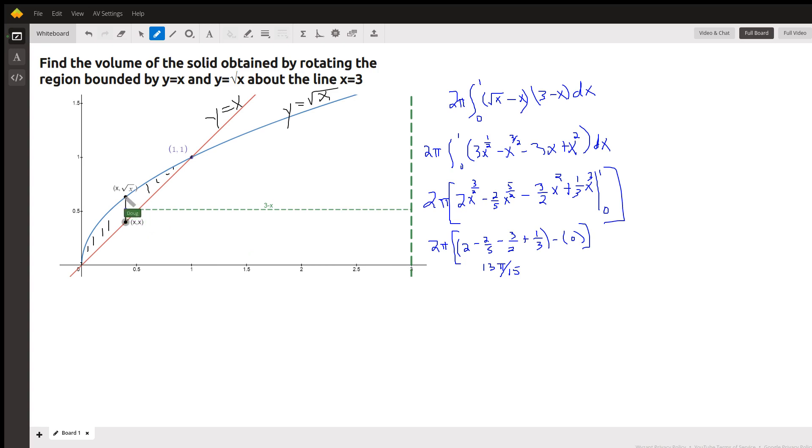So we need an algebraic expression for the height of a typical shell, which is the y coordinate at the top, the square root of x, minus the y coordinate at the bottom, which is just x, because that's the line y equals x.